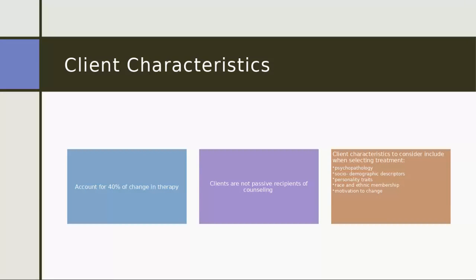Some client characteristics to keep in mind when selecting your treatment would be, first of all, their psychopathology — so what is their level of symptom severity? Their sociodemographic descriptors, such as their gender, their age, personality traits like sociability and coping style, race and ethnic membership, and their motivation or readiness for change.